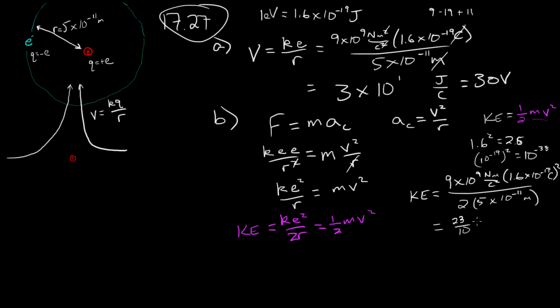Times 10 to the... Alright, let's do this out here. Here, we've got plus 9, minus 38 from the e squared term. And then I need to add 11. 9 plus 11 is 20. Minus 38 is minus 18.